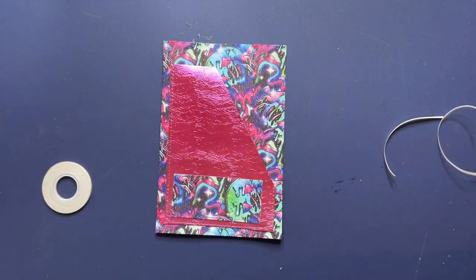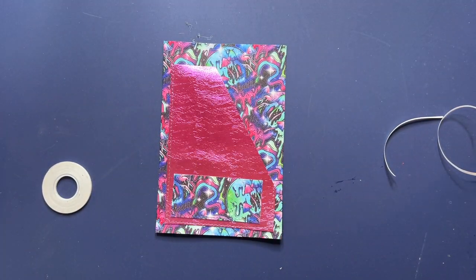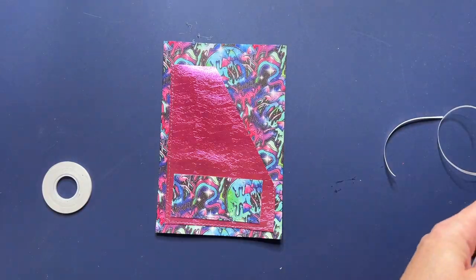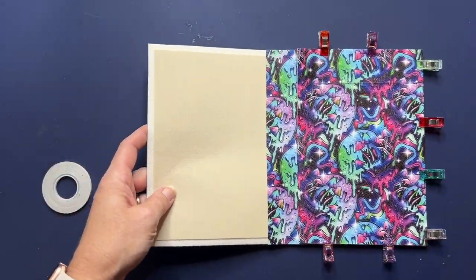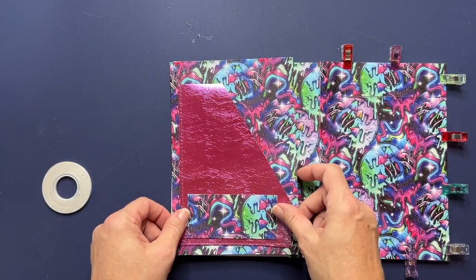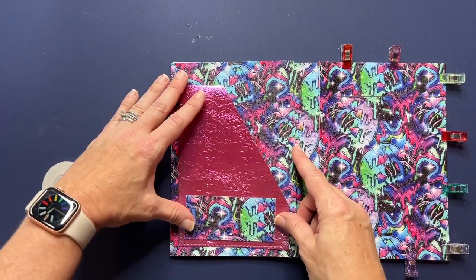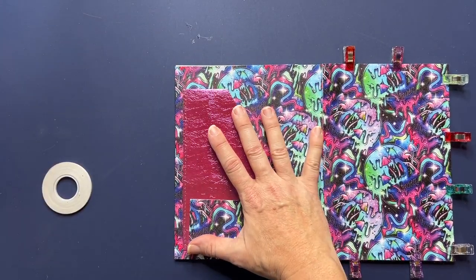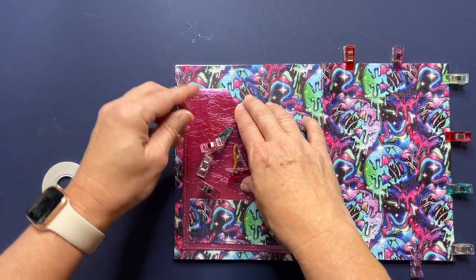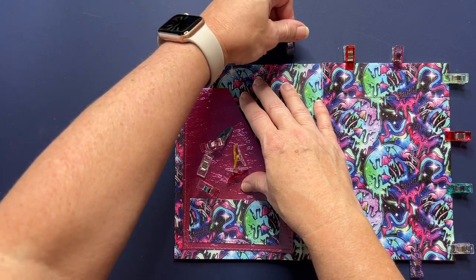So the next thing we need to do, again, is to grab our main panel, and we're going to line this up on the left side here. Okay, and then we're going to clip this one in place, just like we did on the other side.